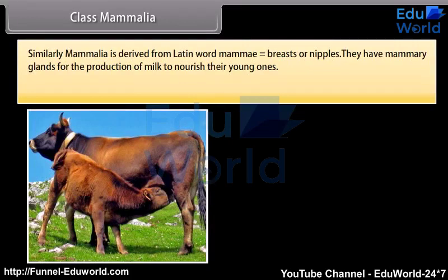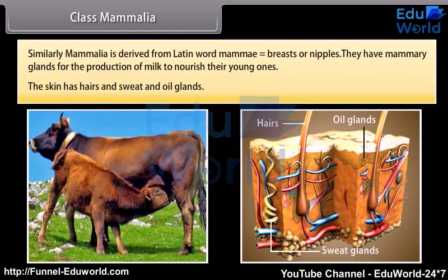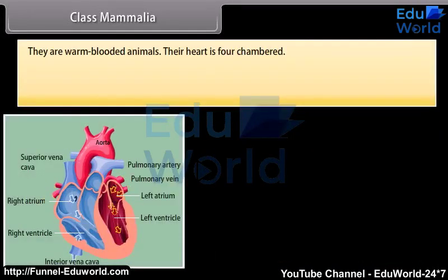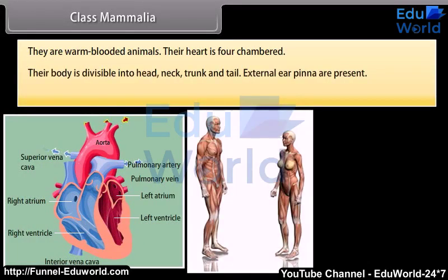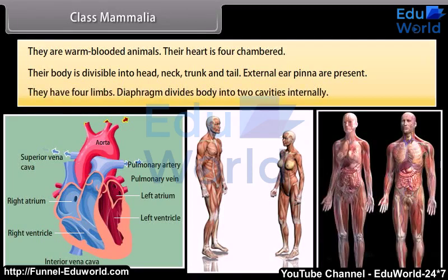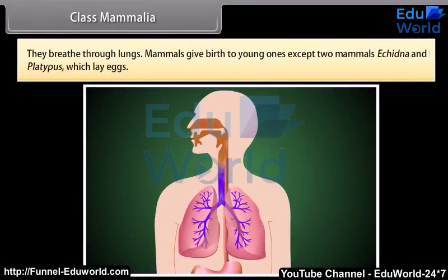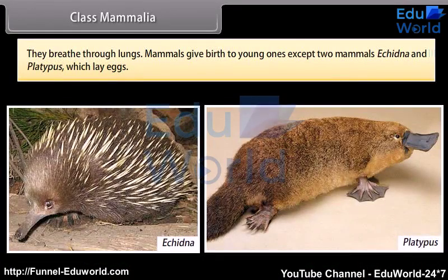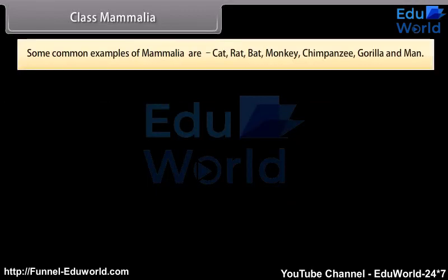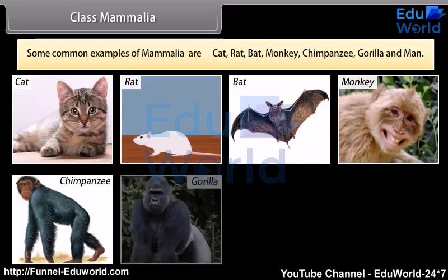Class Mammalia. Mammalia is derived from Latin word mamma, meaning breasts or nipples. They have mammary glands for the production of milk to nourish their young ones. Their skin has hair, and sweat and oil glands. They are warm-blooded animals. Their heart is four-chambered. Their body is divisible into head, neck, trunk, and tail. External ear pinnae are present. They have four limbs. The diaphragm divides the body into two cavities internally. They breathe through lungs. Mammals give birth to young ones, except two mammals — Echidna and Platypus — which lay eggs. Some common examples are cat, rat, bat, monkey, chimpanzee, gorilla, and man.